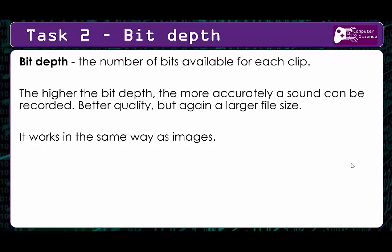Moving on to bit depth - the number of bits available for each clip. The higher the bit depth, the more accurately a sound can be recorded, giving better quality but a larger file size. The higher the bit depth means more ones and zeros to represent that sound, and the more ones and zeros, the bigger the file. It works the same way as with images when we looked at color depth - more colors meant more ones and zeros and a larger file size.